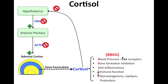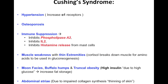Cortisol also inhibits bone formation, it is anti-inflammatory, and it decreases your immune function. Additionally, it increases gluconeogenesis, lipolysis, and proteolysis. Now we can talk about some of the Cushing syndrome symptoms.